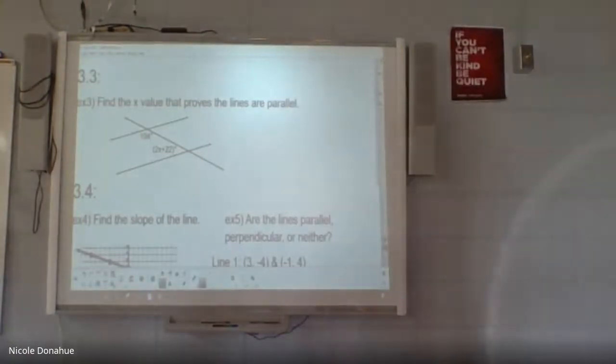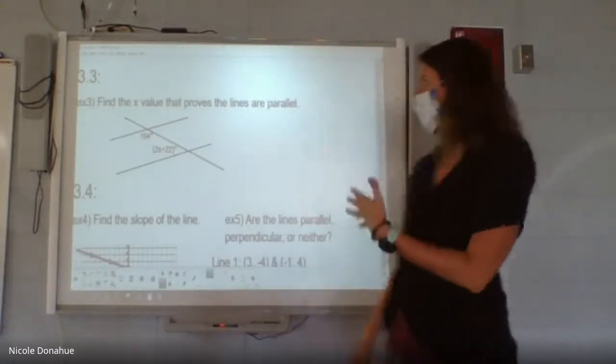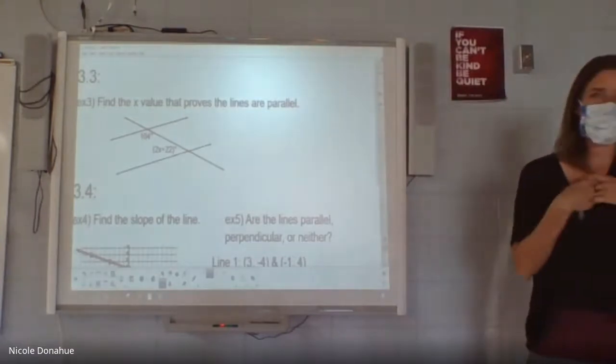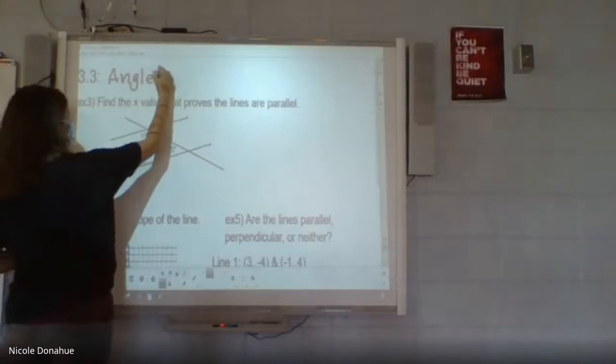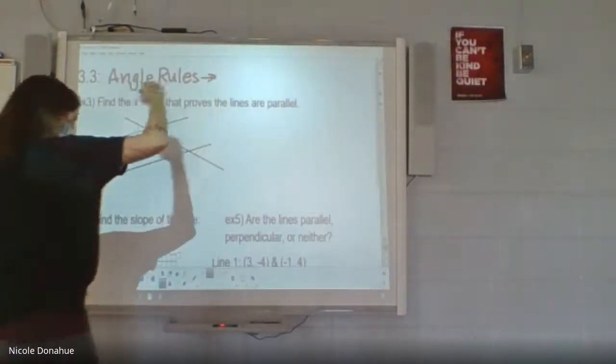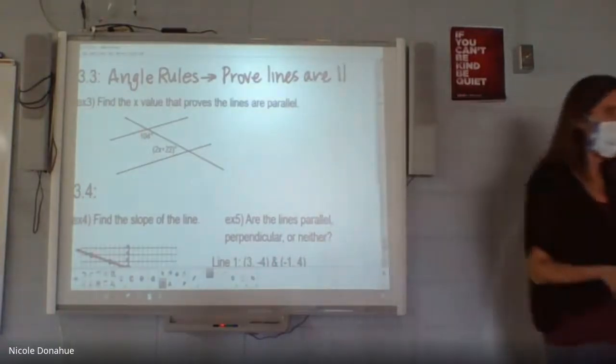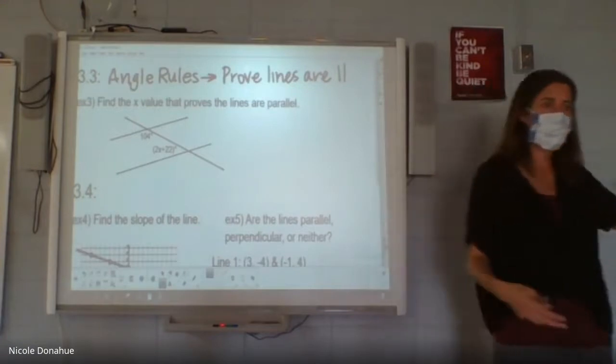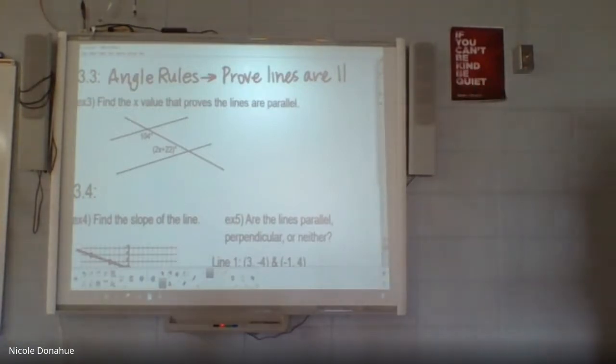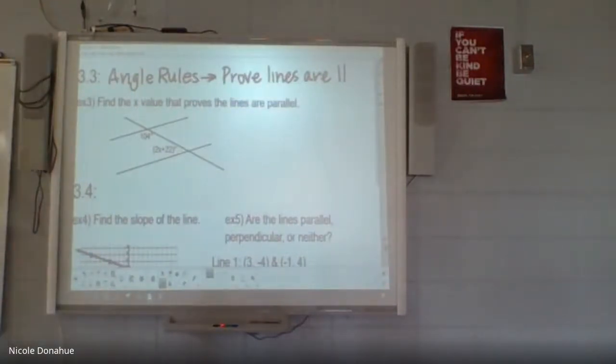So in section 3.3, basically what we can use is we can use all our different angle rules to prove the lines are parallel. So right now we don't necessarily know the lines are parallel. We try to assume they would be and figure out the x value that would make that work. Now, knowing some of the names, when I asked Luke how he knew and he told me alternate interior angles, and then Reese jumped in and said you could have used corresponding, the fact that they know those names, that's really helpful. And I'm assuming they're going to do well because they know the reasons why things work.